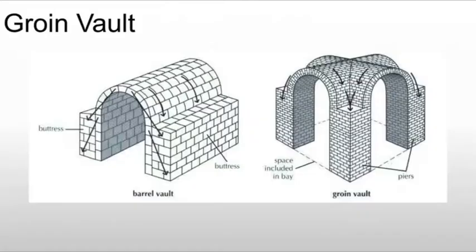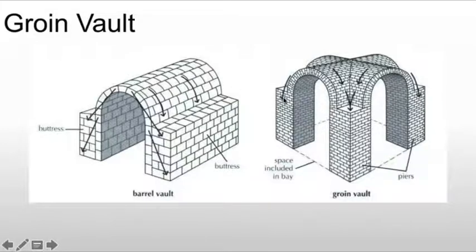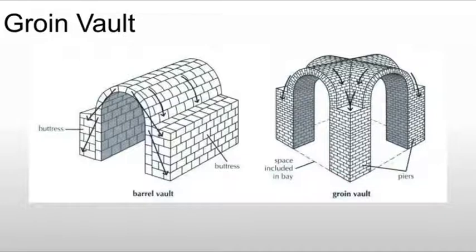Another way that we tend to see it is groin vaults. The most basic form of vault is, of course, the barrel vault — that's where I've taken my basic arch and stretched it. A groin vault takes two barrel vaults and puts them at 90 degrees, or perpendicular to one another, which opens up the sides. It uses less material and the support system takes up less space. So effectively, we've opened up these two walls on either side.